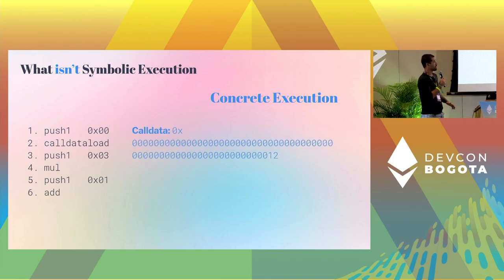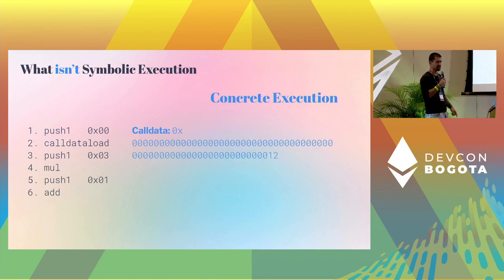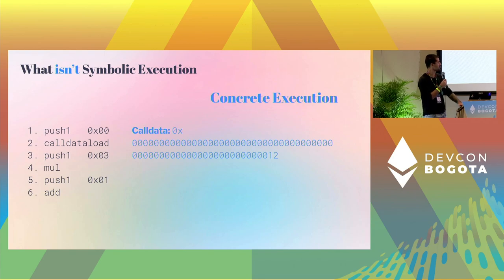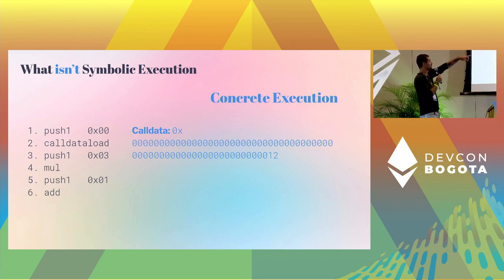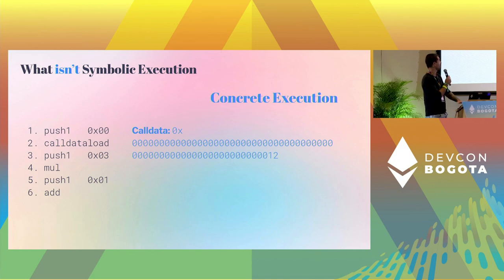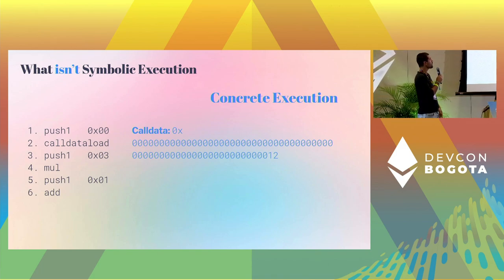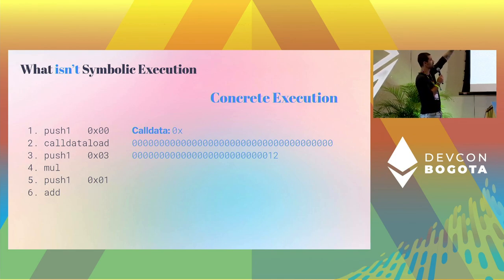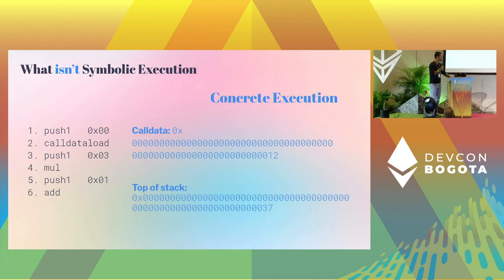Let's say we have this call data — it's 0x12 in hex, which is 18 in decimal. If you run this program, we push zero, call data load at that position, get 0x12, push 3, multiply to get 0x36, add 1, and get this number at the top of the stack. That's concrete execution: you have a program, a concrete input, you execute and get an output.